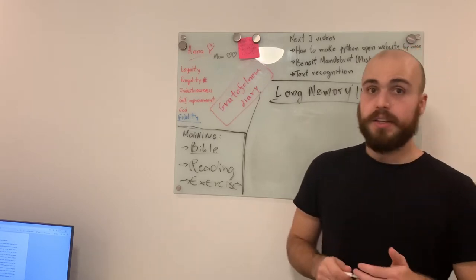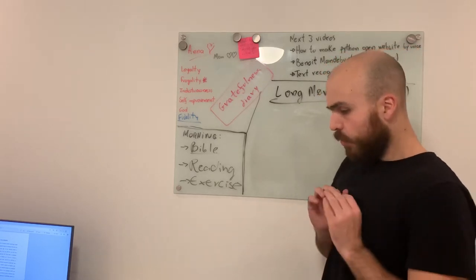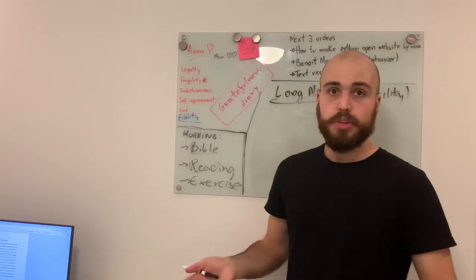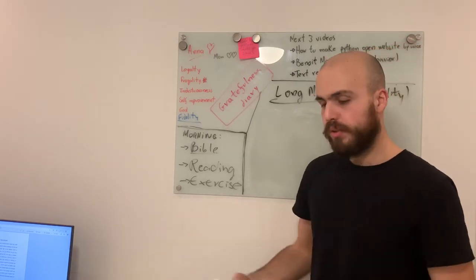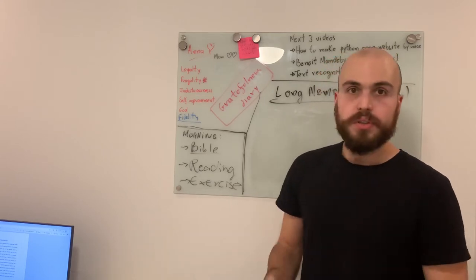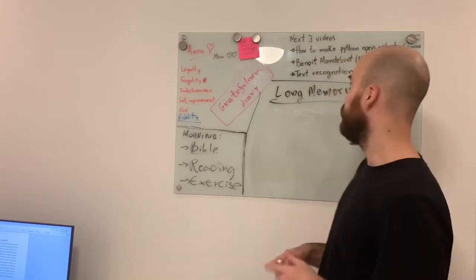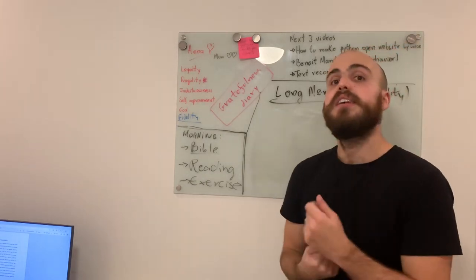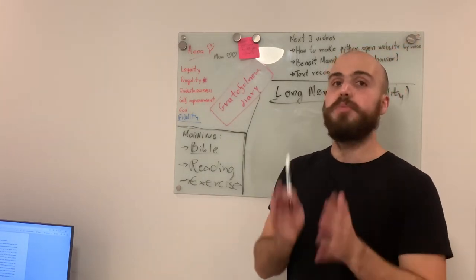So why are the models used today, widely used today, not that good? For two reasons: one is because of something called long memory, and the second thing is volatility clustering. Today I'll explain about long memory.